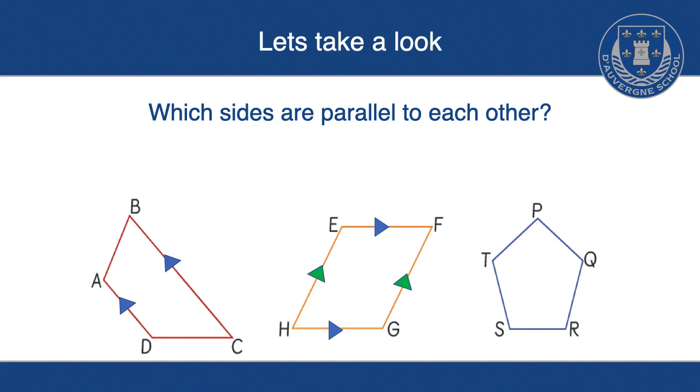Because they're the same distance in between. So as you can see, I've used arrows to symbolise which are parallel to which. And I've also used a different colour because sometimes there might be more than one pair of lines on the same shape that are parallel.